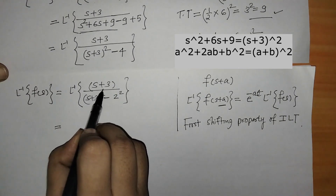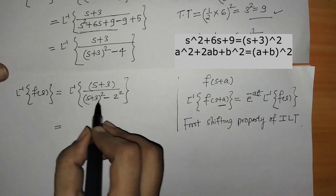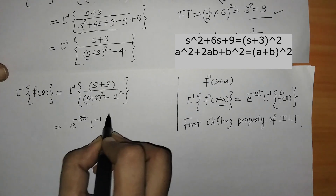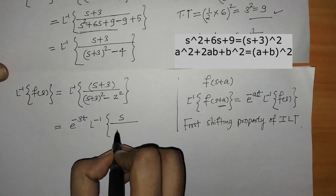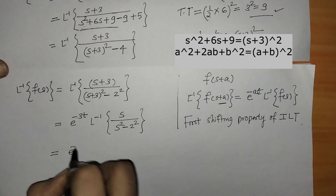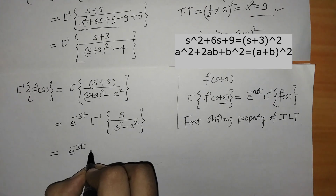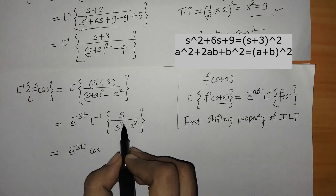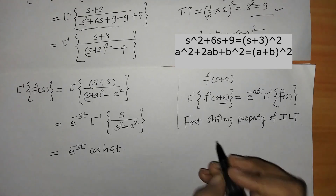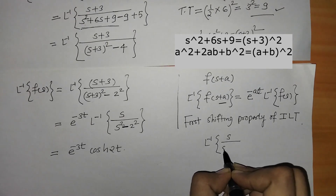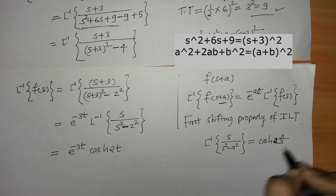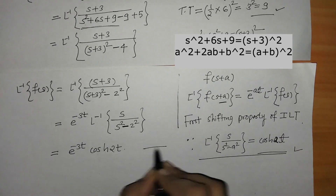Here we have (s + 3) in both numerator and denominator, so we can take the +3 outside. We write e^{−3t} and the remaining L inverse of s/(s² − 2²). We know the formula: L inverse of s/(s² − a²) = cosh(at). So this gives cosh(2t), and we have used the standard formula here.